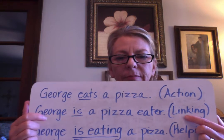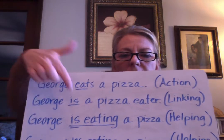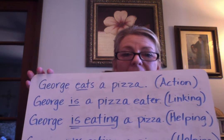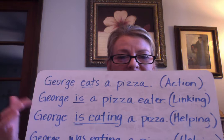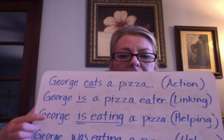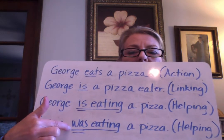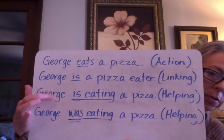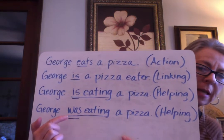And then what we're going to be working more with today are these helping verbs. Look at this sentence: George is eating a pizza. 'Eating' is an action word, and 'is' is a helping verb — it's letting us know that this eating is happening right now, showing present tense. Now look at this last one: George was eating a pizza. Here 'was' is a helping verb because it's telling us that the eating was happening in the past, not right now. We know the action was happening in the past because of this helping verb.